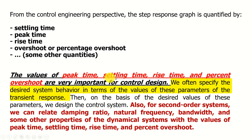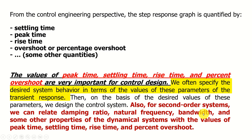The values of peak time, settling time, rise time, and percent overshoot are very important for control design. We often specify the desired system behavior in terms of the values of these transient response parameters, and then on the basis of the desired values we design the control system. Also, for second-order systems, we can explicitly relate the damping ratio, natural frequency, bandwidth, and other properties of the dynamical system with the values of peak time, settling time, rise time, and percentage overshoot — connecting time domain characteristics with frequency specifications to design controllers.